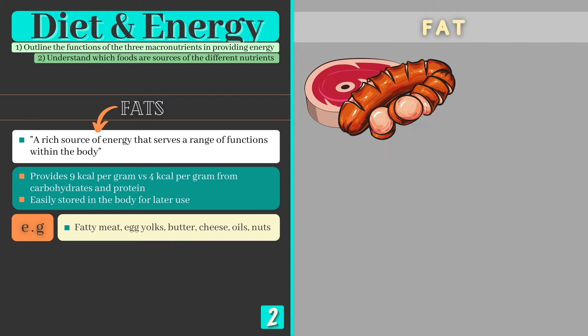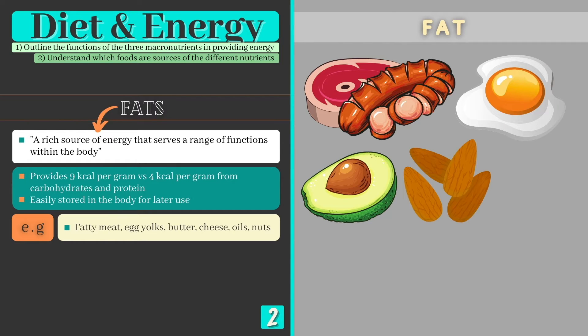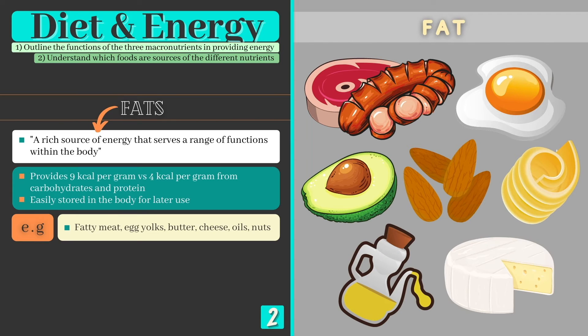Fat sources include fatty meats, egg yolks, avocados, nuts, butter, cooking oils and cheese.